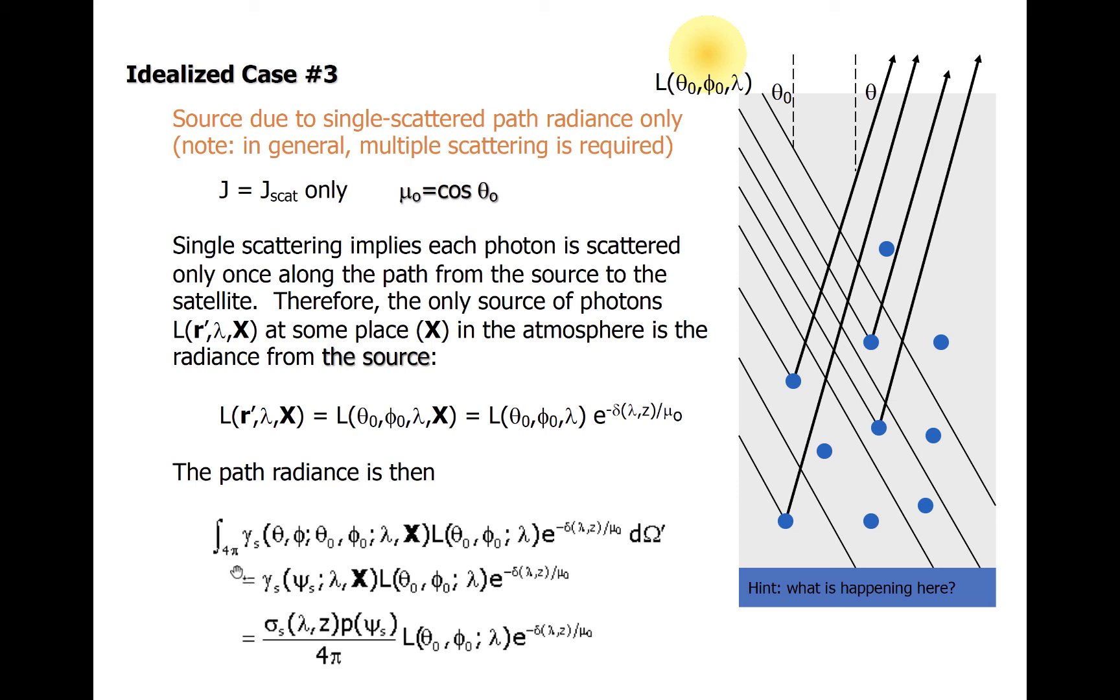In this class, we will not try to compute or use any of these phase functions, but I do want to at least skim the surface on how they can be expressed as a source or sink of radiation to a satellite. Ultimately, this gamma function can be expressed as sigma, the scattering coefficient over 4 pi, times this p function, which is just a probability of a scattering interaction that has this particular scattering angle.